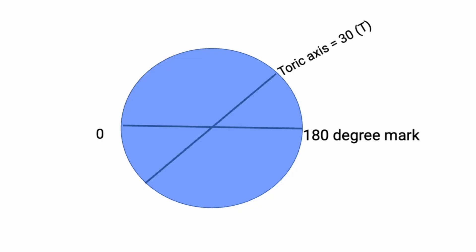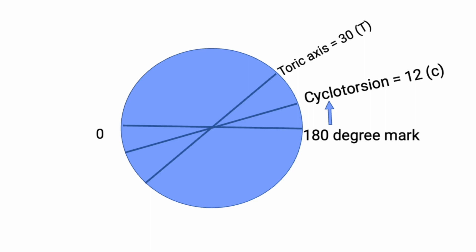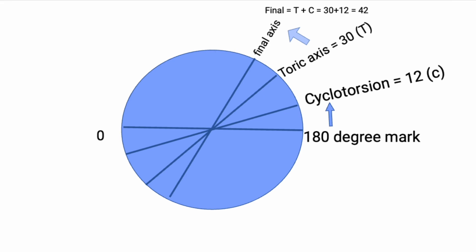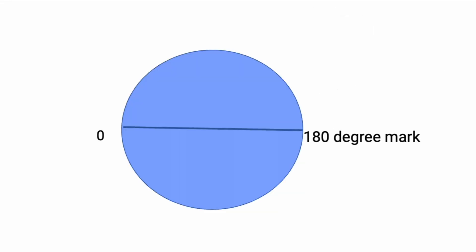Sometimes the conversion is easy — as in this figure, the cyclotorsion is 12 and you just have to add the cyclotorsion value to the TORIC axis. The app reading will be the addition of the cyclotorsion and the axis.